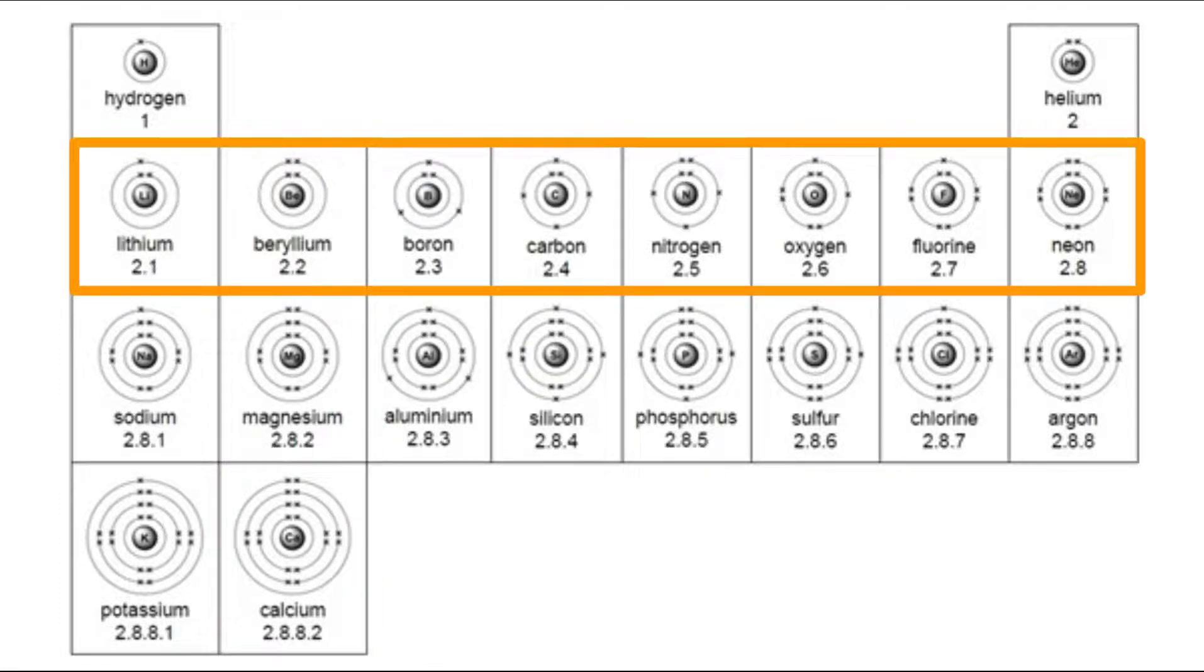Now, let's take a look going across a row or a period. And what you can notice here is that we've got two in the first shell, one in the second shell, and then we've got two and two, two and three, two and four, two and five, two and six, and so on, all the way up to two and eight. So in this period, the number of shells is two, but the valence electrons are going up.